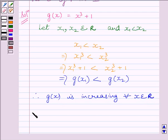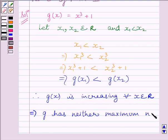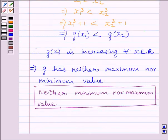This implies function g has neither maximum nor minimum value. So, our required answer is function g has neither minimum nor maximum value. This completes the session. Hope you understood the session. Goodbye.